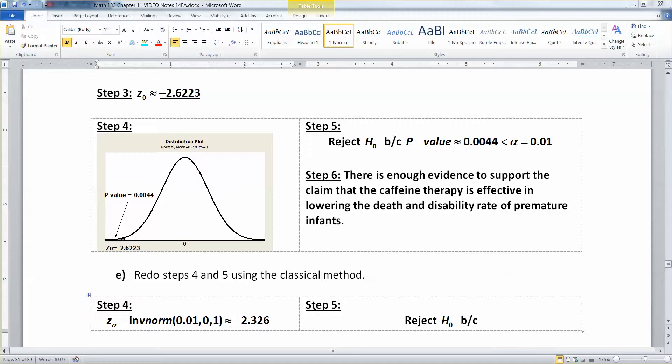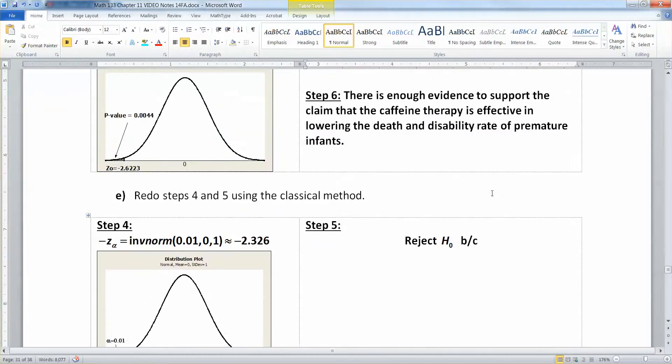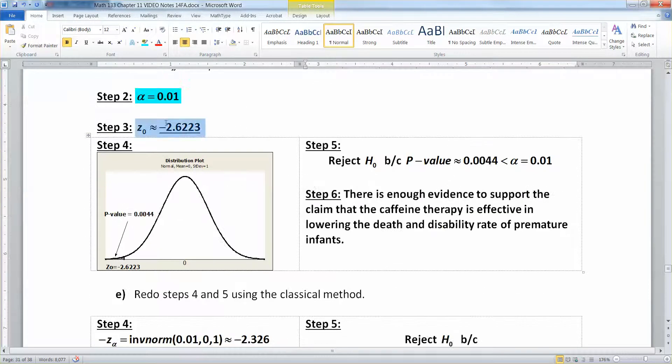All right, so there's my critical value. Now I've got to draw the picture. There it is. So there's 0.01 and there's the negative Z alpha. I can draw an alpha there, but that A is an alpha. And that's negative 2.326. So again, we're going to reject the H naught, and this time it's because negative 2.623 is less than that critical value.